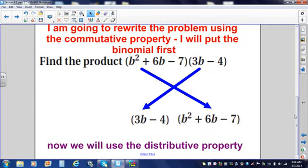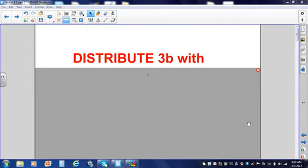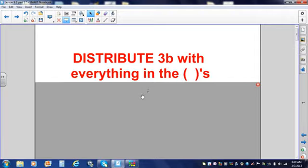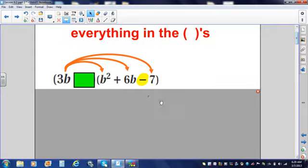So now we are going to use the distributive property. So how do we use the distributive property here? Easy. We are going to distribute the 3b with everything in the parentheses over here to the right. We're going to distribute the 3b with all of these terms. So I'm going to cover up the negative 4, the minus 4, and come back to that later. So let's start distributing.